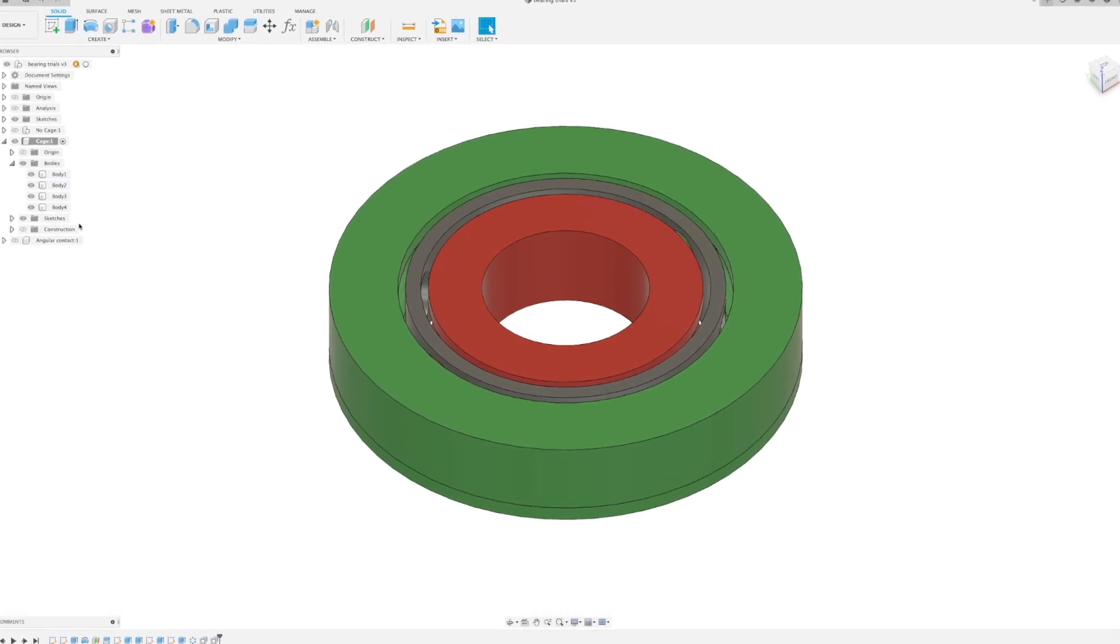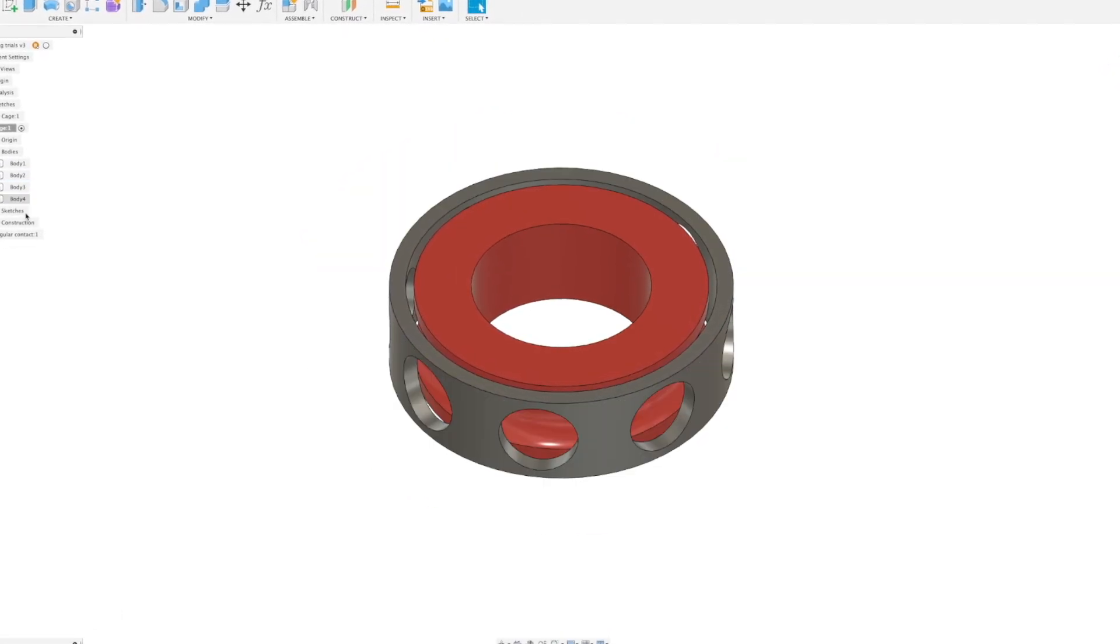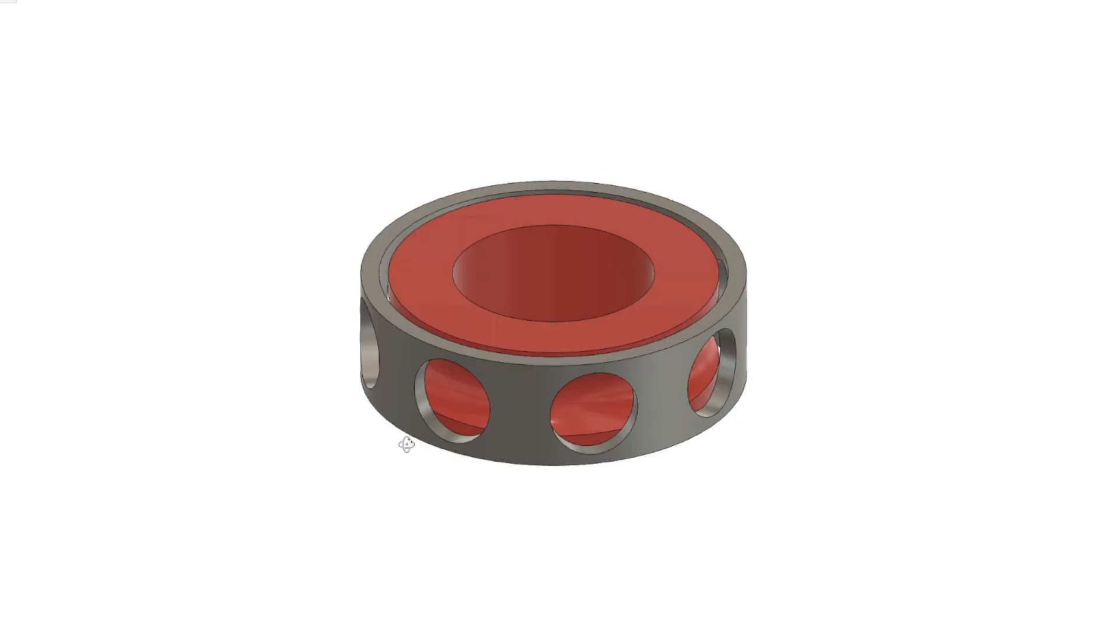Most bearings don't pack the inner race full of BBs like we've done here. Instead, they use a smaller number of ball bearings spaced out by a cage.